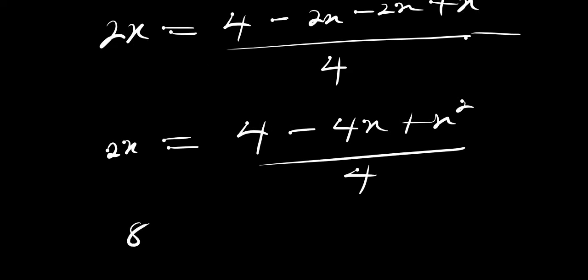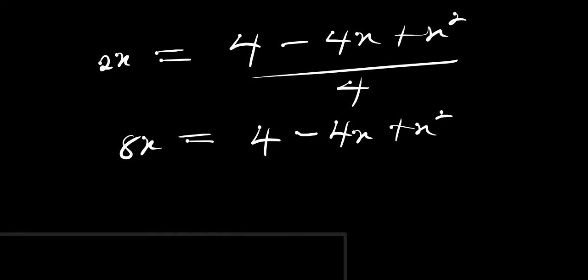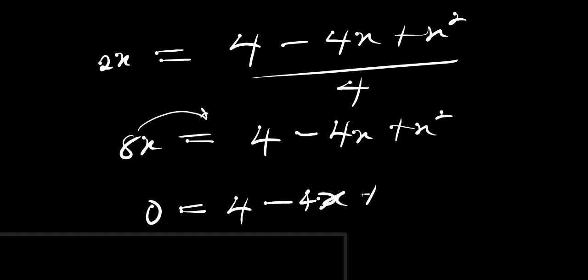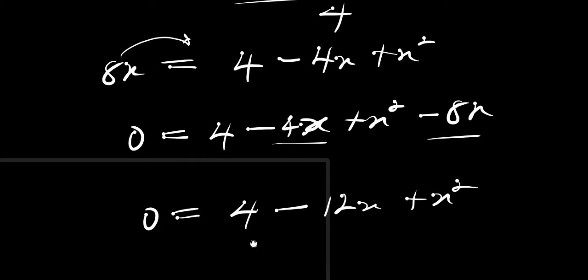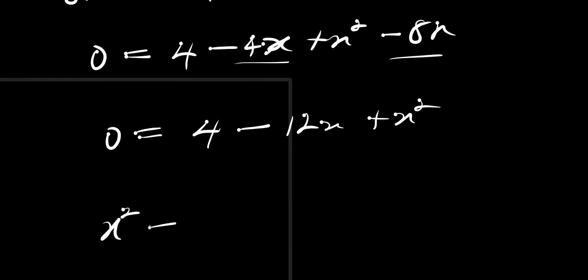Cross multiplying gives us 8x equals 4 minus 4x plus x². Moving 8x over, we have 0 equals 4 minus 4x minus 8x plus x², combining like terms: 0 equals 4 minus 12x plus x². Rearranging this quadratic equation, we have x² minus 12x plus 4 equals 0.